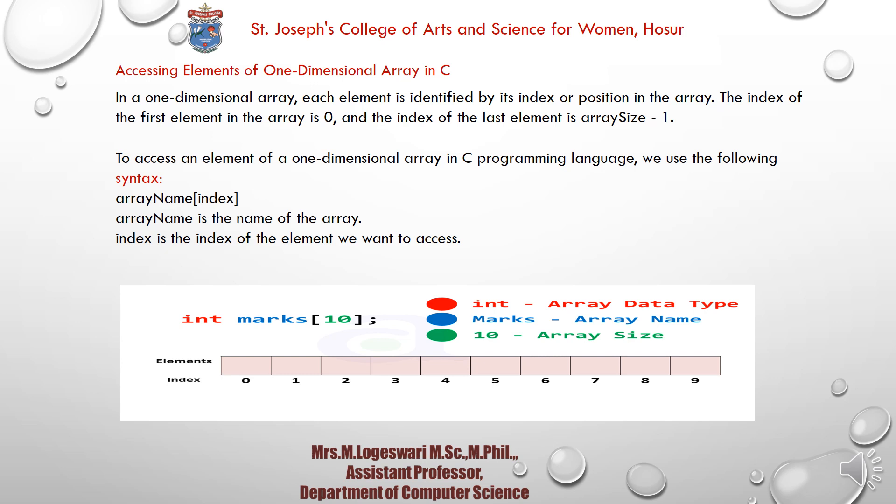Here is an example. The index values are 0, 1, 2, 3, 4, 5. These are the indices, and number[0], number[1], and so on are the elements. You use an integer data type. The array name can be given as 'marks' with the declared array size.